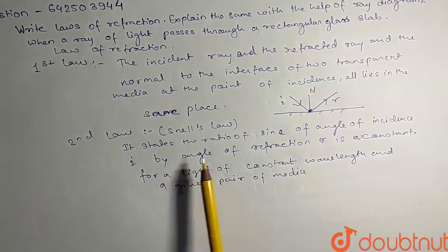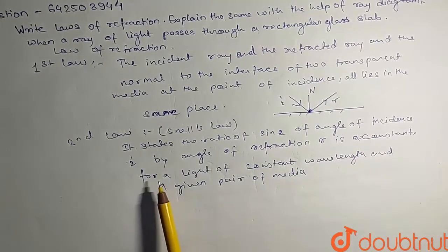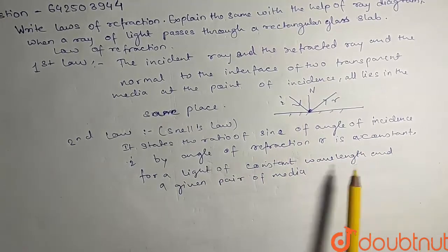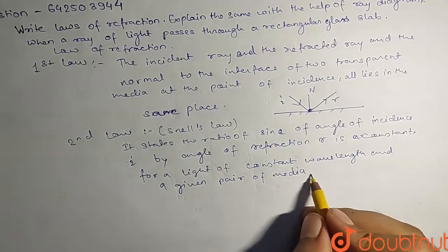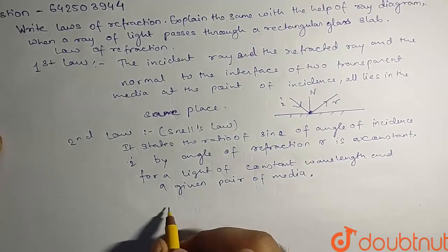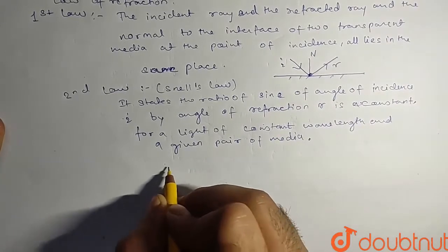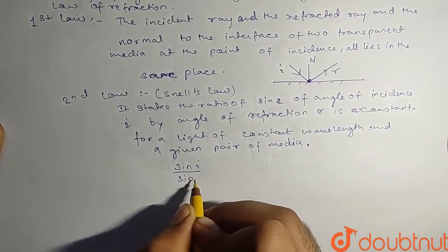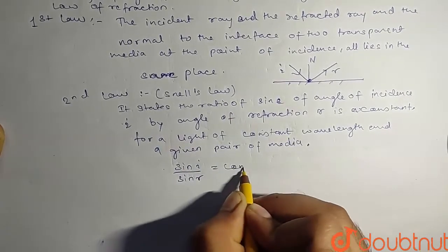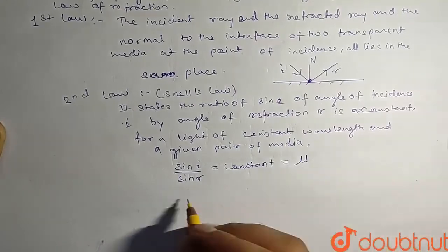So we can derive it in the formula or write it in the formula: sine i by sine r is equal to constant, which is also known as refractive index.